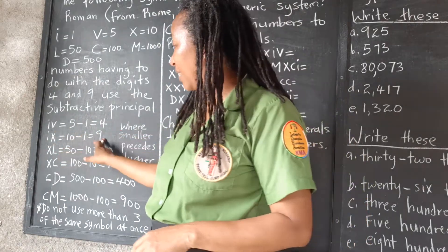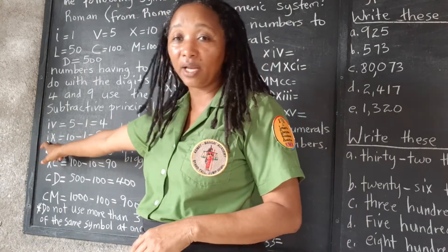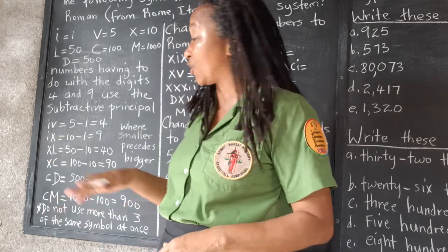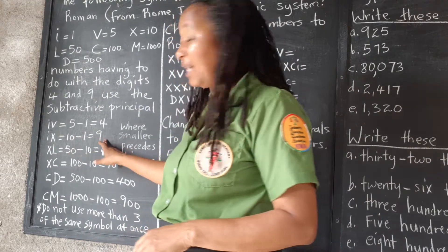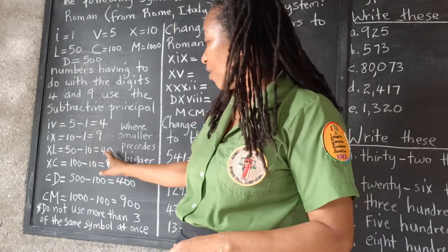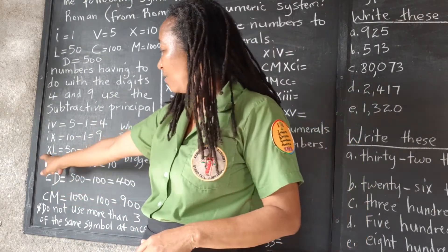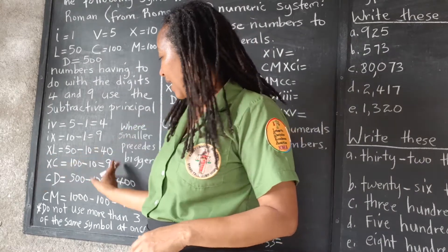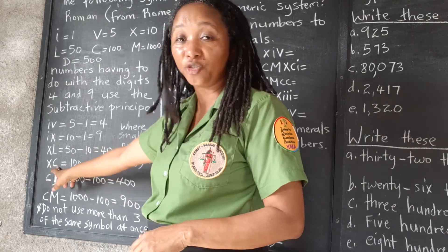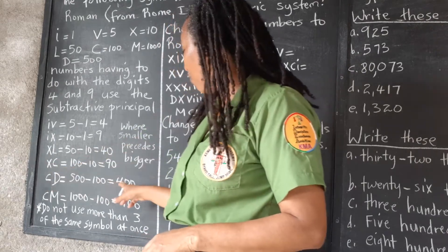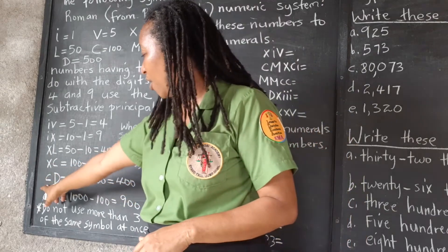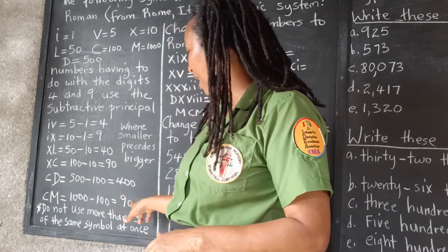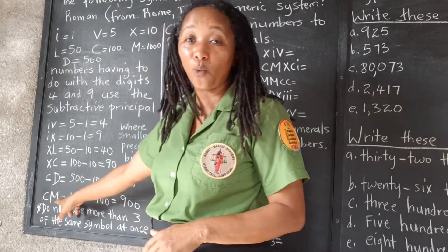For 9, we have the 1 preceding the 10, which means we subtract 1 from 10 — that's how we write 9. For 40, same thing: 10 from 50. For 90: 10 from 100. For 400: 100 from 500. For 900: 100 from 1000.